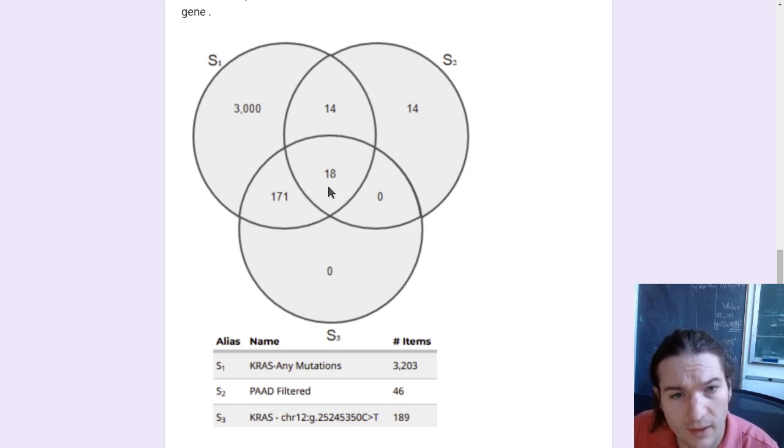18 of the samples that have mutations in KRAS, as well as samples that have any mutation in KRAS, specifically this one, 18 of them have overlap with this subset of the samples we're interested in. So there are 18 samples that are the pancreatic, head of the pancreas, all of that, but also have this mutation. There are 14 that have this mutation, or sorry, have a mutation, but not the particular mutation and overlap with our pancreatic data. So I don't want this one.